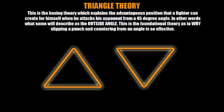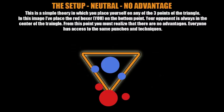We're looking at how to create punching opportunities by taking the outside angle. In other words, we're going to be looking at the foundational theory as to why slipping a punch and countering is so effective. Now I want to stress that this is not something fighters are thinking about in the ring — it's instinctive, based on practice. In boxing there are many different forms: hex theories, diamond theories, and more. We're talking about the most basic one, which is the triangle theory.